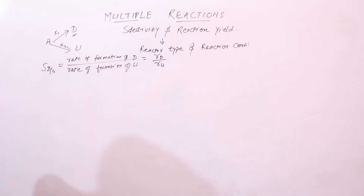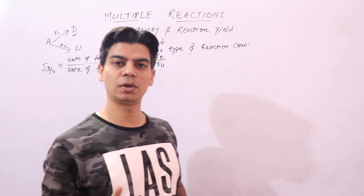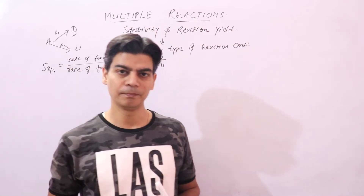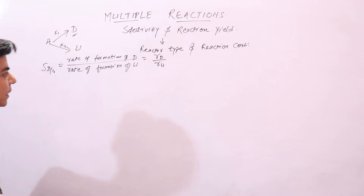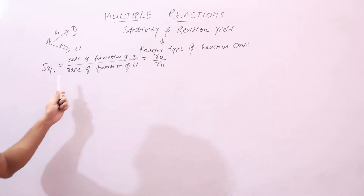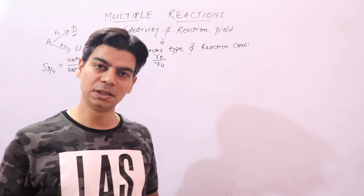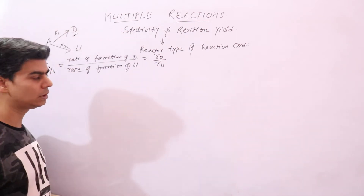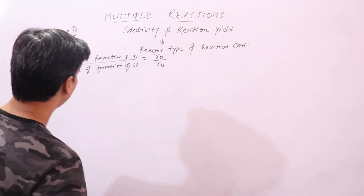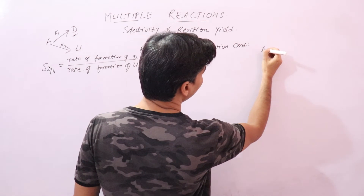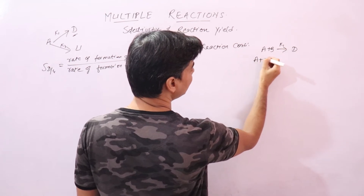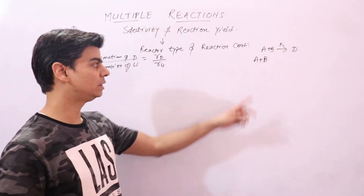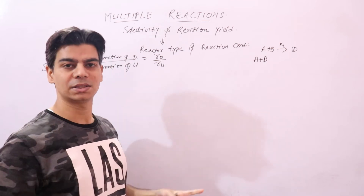We have done this in the previous lecture on membrane reactors, where we learned a little about selectivity. Now, how selectivity helps us determine reaction conditions — let's quickly go through what we covered before. Suppose we have A + B giving desired product D, and the same reactants also forming an undesired product U.